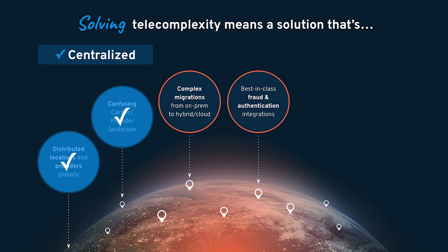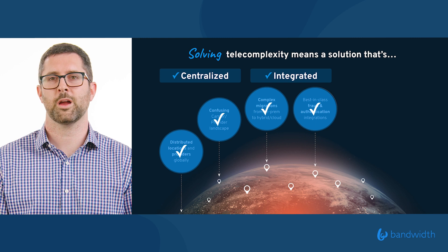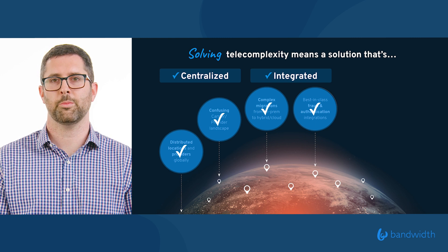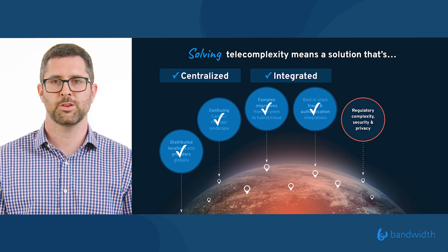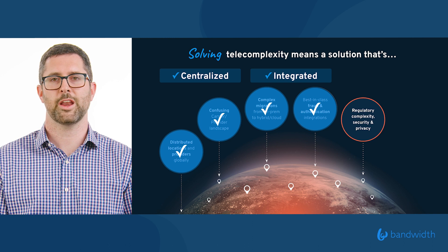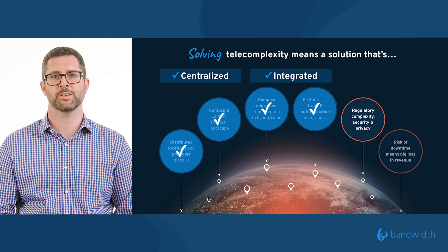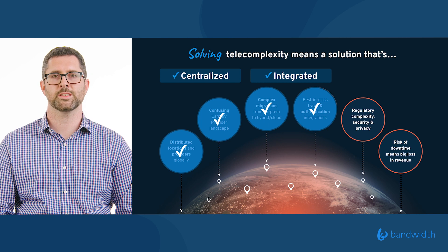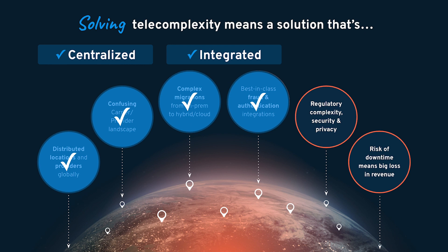These two elements combine into the second piece of solving telecomplexity: making sure you have a cloud solution that is integrated. So centralized, integrated, and then thirdly, solving telecomplexity around regulations, security, and privacy rules — which is exponentially more difficult as you go global. In addition, none of these things matter if you're dealing with the risk of downtime, which can mean big losses in revenue and customer experience. This leads to our third critical pillar: solving telecomplexity with a solution that is resilient.